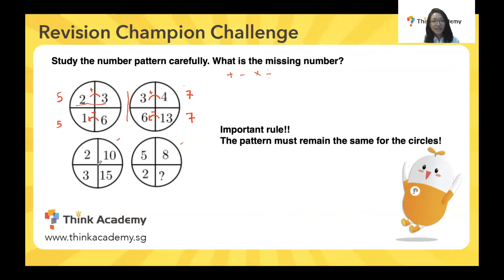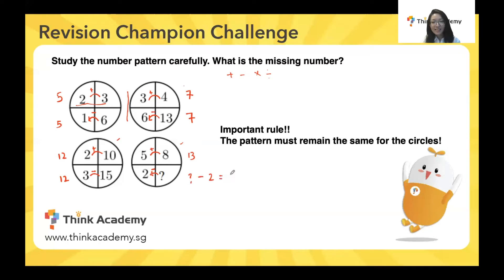Now let's test this pattern in our third circle. Here we plus and here we minus: 10 plus two gives us 12, and 15 minus three also gives us 12. So for our last circle, we use this exact same pattern — 8 plus 5 gives us 13, and the question mark minus two must also give us 13. So the question mark must equal 15. The answer to this question is 15.